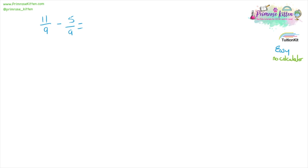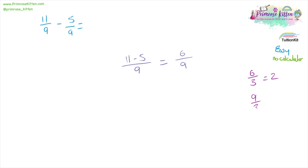11 over nine minus five over nine. 11 minus five over nine equals six over nine. Both six and nine are divisible by three. Six divided by three equals two, nine divided by three equals three. So our answer is two over three.